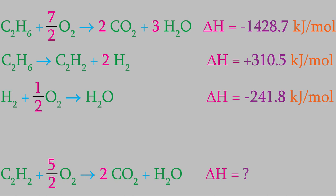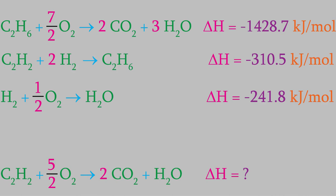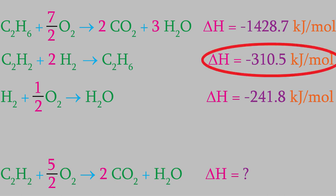Here's a good rule of thumb: look at the overall reaction you're shooting for, and try to find a compound that only appears in one of the reactions you have information about. For example, the first reactant in our overall reaction is acetylene, C2H2. In the three reactions we have to work with, acetylene only appears in the second reaction. Unfortunately, in that reaction acetylene is on the product side, and in our target reaction it's on the reactant side. That means we'll need to flip this second reaction around. Now acetylene and hydrogen are on the left, and C2H6 is on the right. Remember: when you perform a chemical reaction in reverse, it changes the sign on the enthalpy. So this new reaction will have an enthalpy of negative 310.5 kJ per mole.